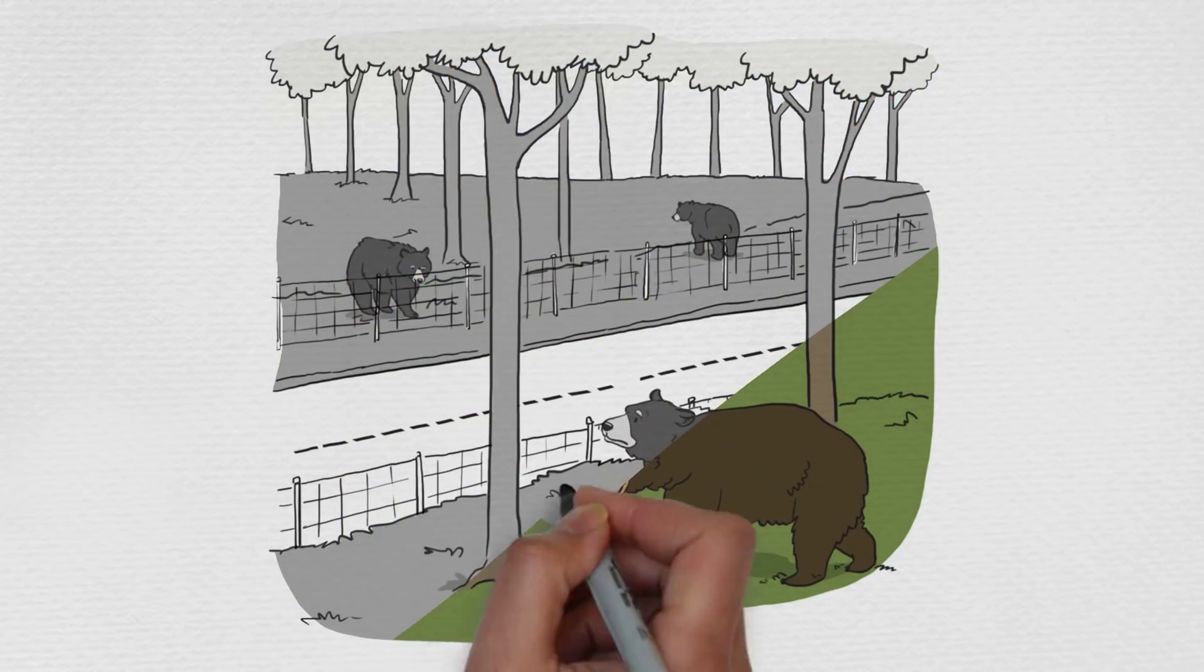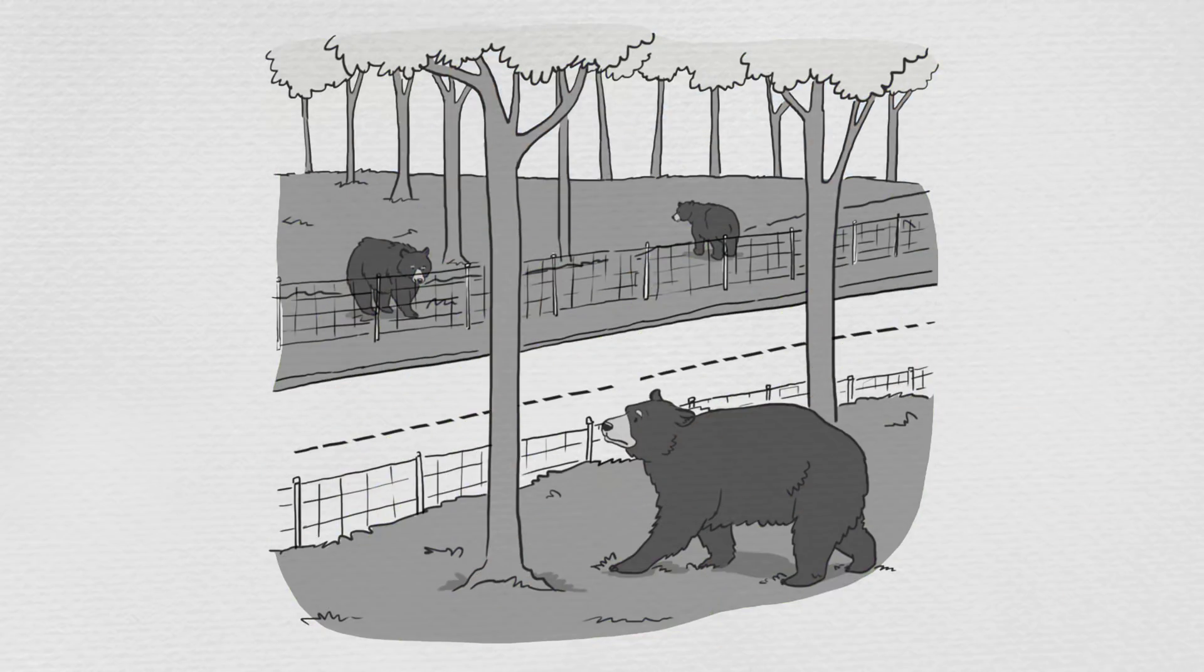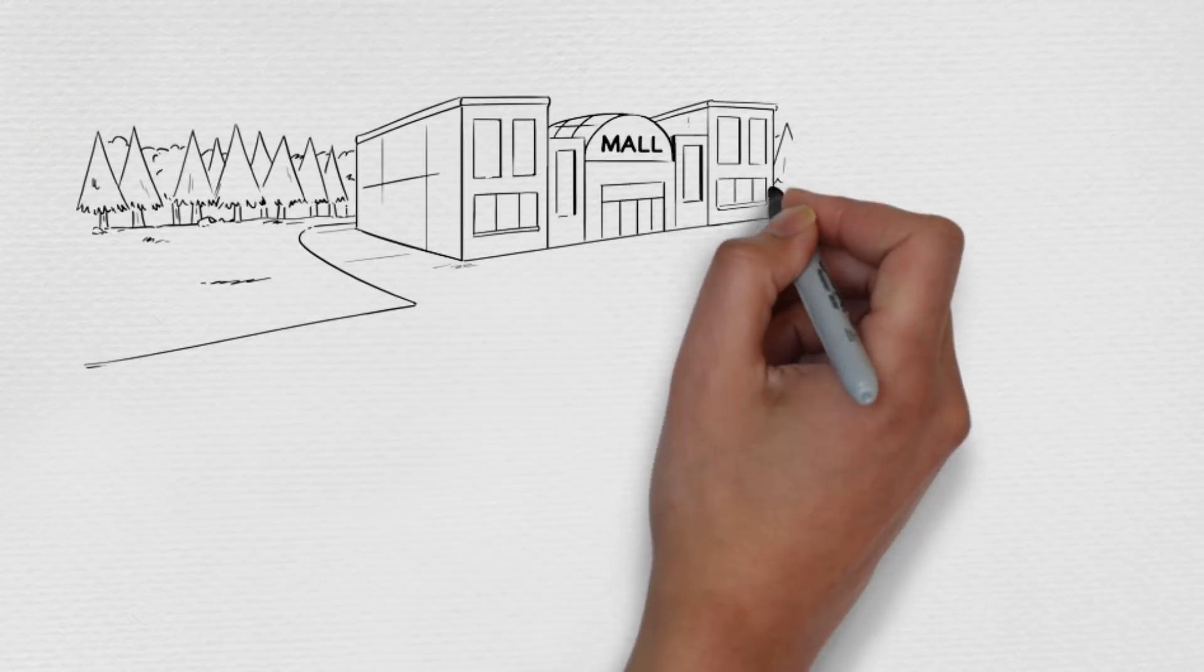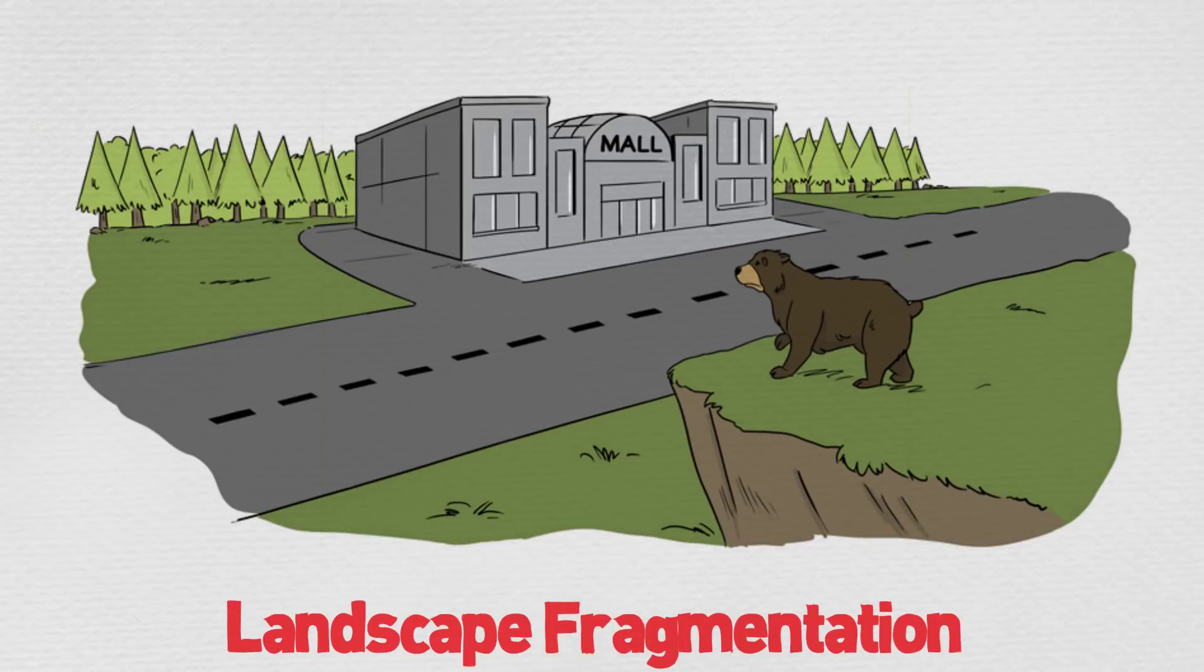What happens when an ecosystem is divided by roads or by other human development? This is called landscape fragmentation.